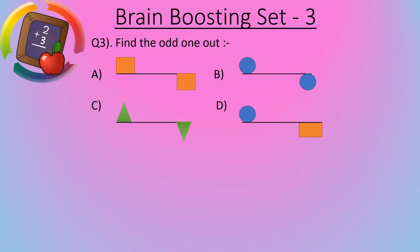Question number 3 is find the odd one out. So option A, this one is square and this one is a square. So two squares are there in a line. Option B, here circle and here circle. So two circles are there. Option C, one triangle and here one triangle. So two triangles are there.